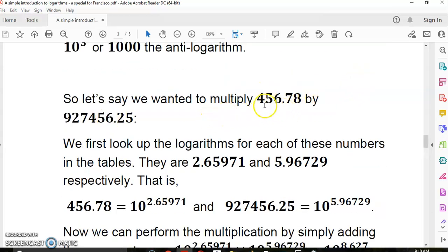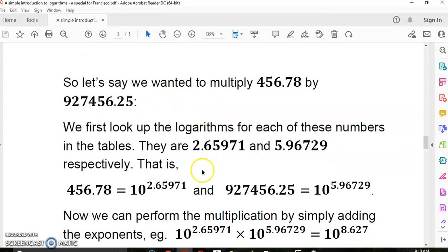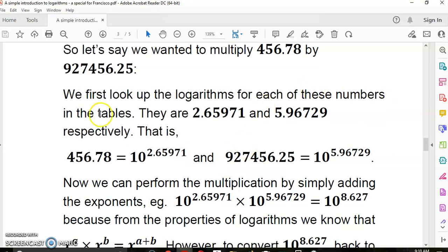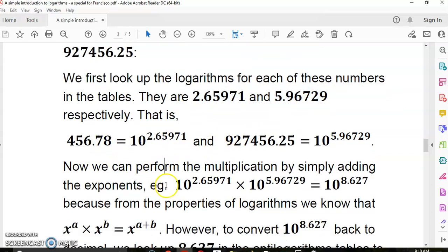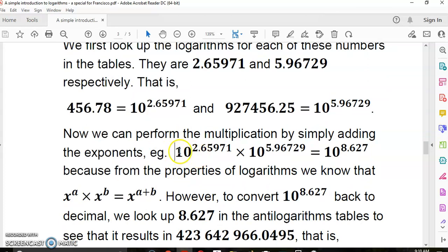For example, if we had the term 10 to the 3, we call 3 the logarithm and 10 to the 3 or 1000 the anti-logarithm, which is just going back the other way. Now let's say we wanted to multiply this number by this number. That can take a very long time, and it could be very error prone if we're doing it manually. So we first look up the logarithms for each of these two numbers.